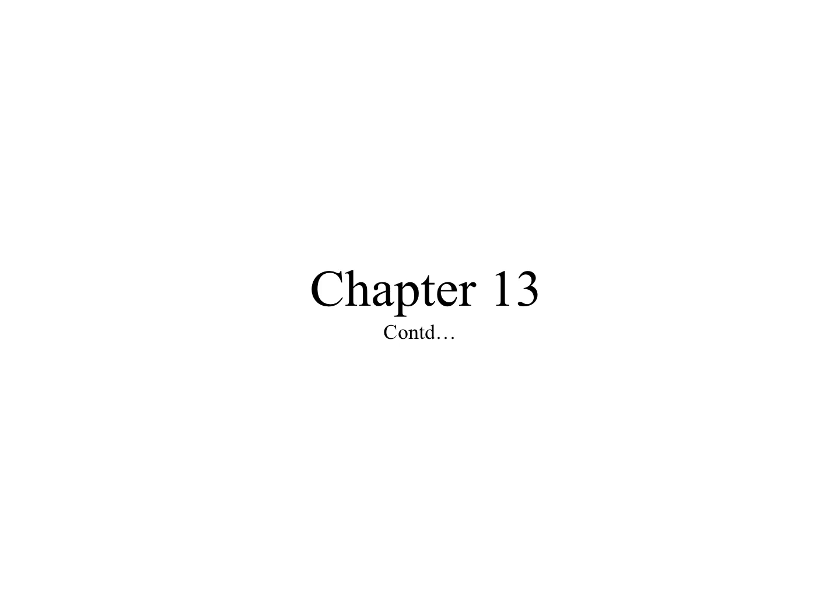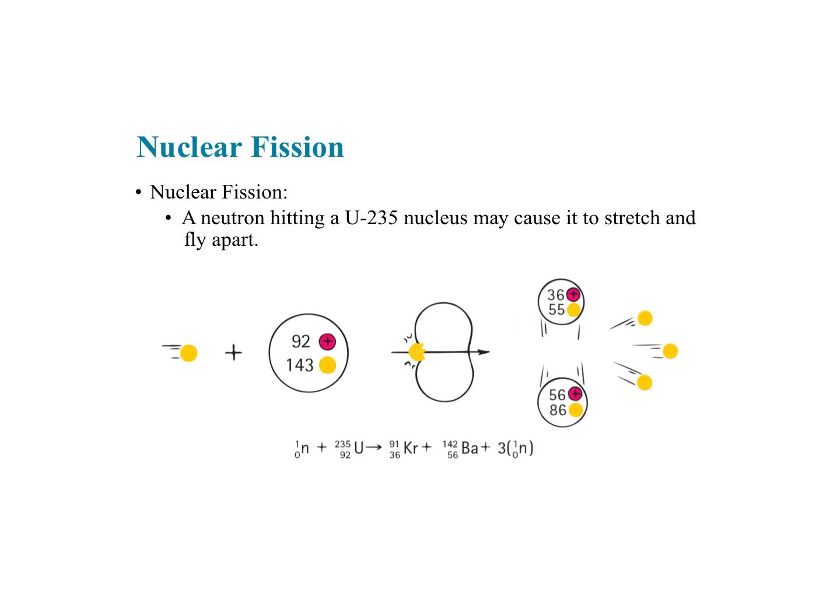We're going to continue — this is our last video on chapter 13 — and we're going to look at nuclear fission and nuclear fusion. Nuclear fission is a process by which a heavy dense element is split into smaller elements, and nuclear fusion is the reverse: a process where lighter elements are fused together to make heavier elements. Both of these processes generate energy.